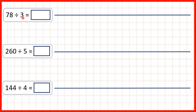So instead what we can use is chunking. Starting at 0, we know that 10 times 3 is 30. So instead of jumping 3 each time, we can make one big jump of 10 times 3 to get to 30. But 30 still isn't very close to 78, so we can make another jump of 10 times 3, adding another 30, to get to 60.